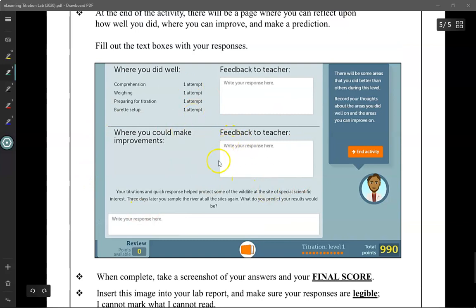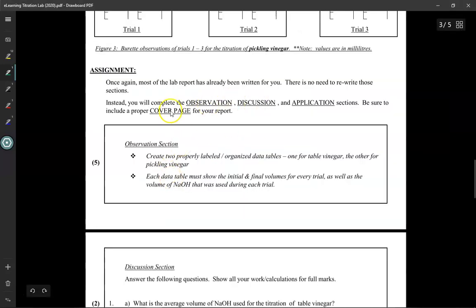Alright, so once again, when you're done the simulation, which I do recommend you do first before you do the rest of the lab report, do the simulation first and then screenshot it. Tell me what your score is. Tell me what your responses are. And then copy and paste this image into your lab report. Alright, so these are the four sections that I need you to complete for this specific lab report.